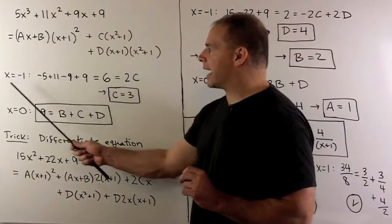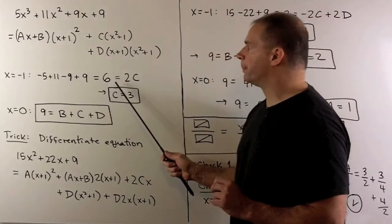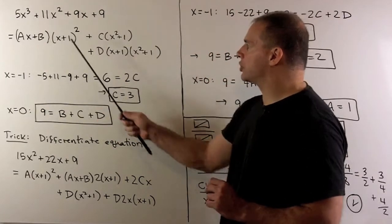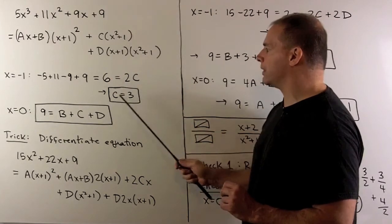For instance, if I let x be equal to minus 1, on the right-hand side, we work it out and we get 6. On this side, this term goes away, this term goes away. So I'm left with 2c and we have that c is equal to 3.